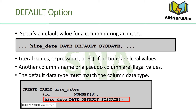When you define a table, you can specify that a column should be given a default value by using the DEFAULT option. This option prevents null values from entering the column when a row is inserted without a value for that column. The default value can be a literal, an expression, or a SQL function such as SYSDATE or USER, but the value cannot be the name of another column or a pseudocolumn such as NEXTVAL or CURRVAL. The default expression must match the data type of the column.